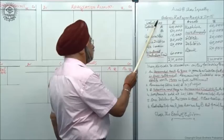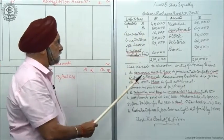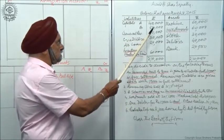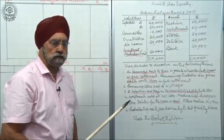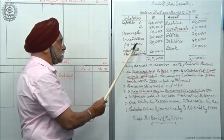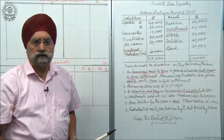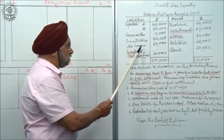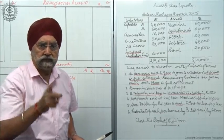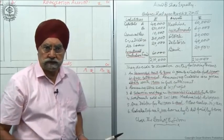A and B are sharing profits equally. Here is the balance sheet: capital 40,000 and 50,000. They have a general reserve of 10,000. As soon as you read general reserve, your attention should go to the ratio because this general reserve will go to A and B in that ratio. Then these partners have creditors of 30,000. A has already given a loan to the firm for 20,000. A's loan will be paid after the outside liabilities are paid, but before the final settlement of the partner.